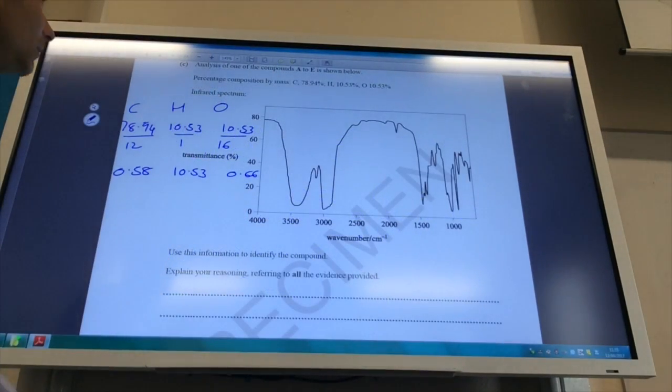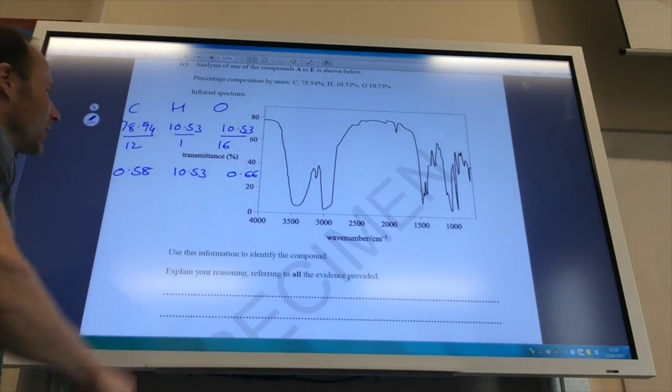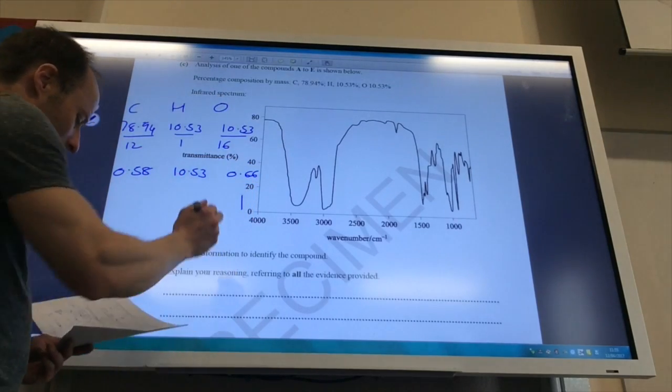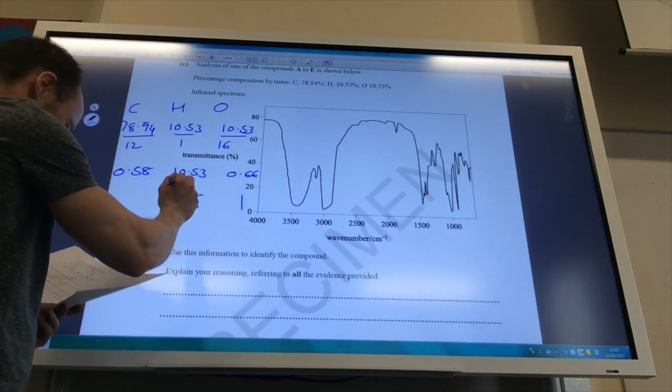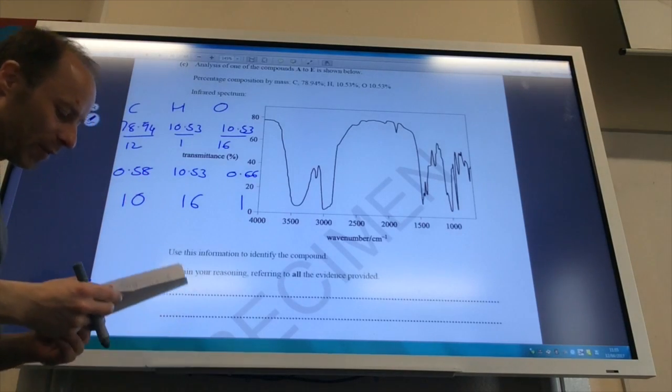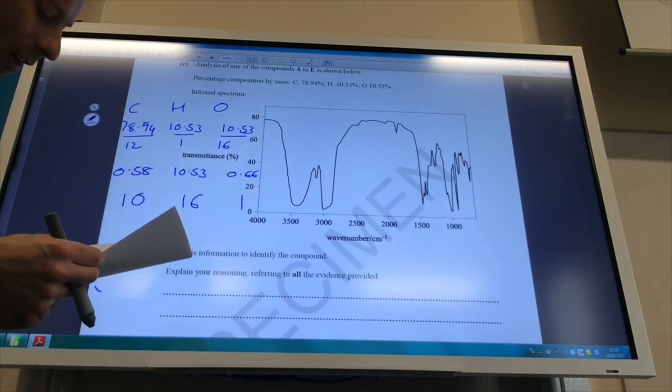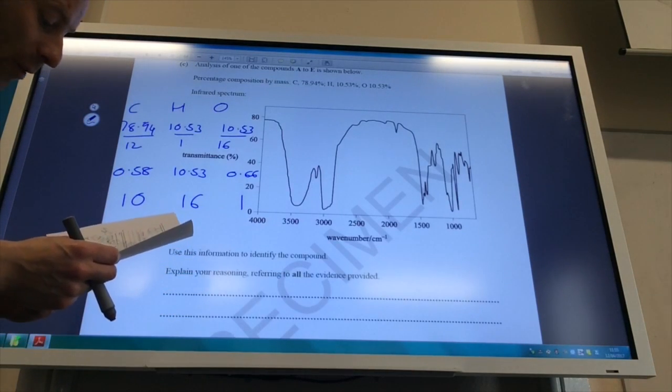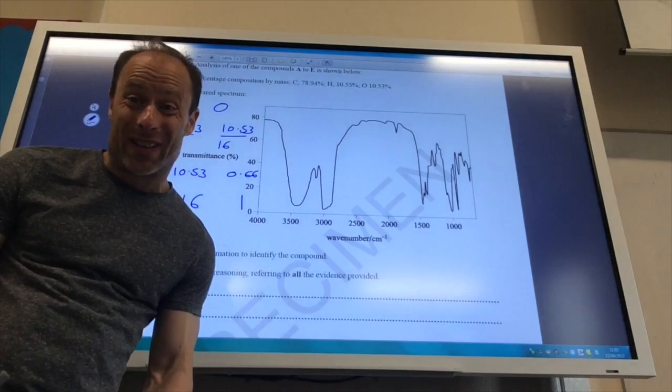Okay, so it's then analyzed one of the compounds A to E, and it wants to identify which one. So percentage composition by mass, they give me carbon, hydrogen, oxygen. So I work out that, divide by the relative atomic mass for each, to give me this, then divide by the smallest one, which is the oxygen. So that comes to 1, that comes to 16, and then that comes to 10. So I'm looking for a compound with 10 carbons, 16 hydrogens, and 1 oxygen. So the only one that works out when you look at the other ones is actually C.